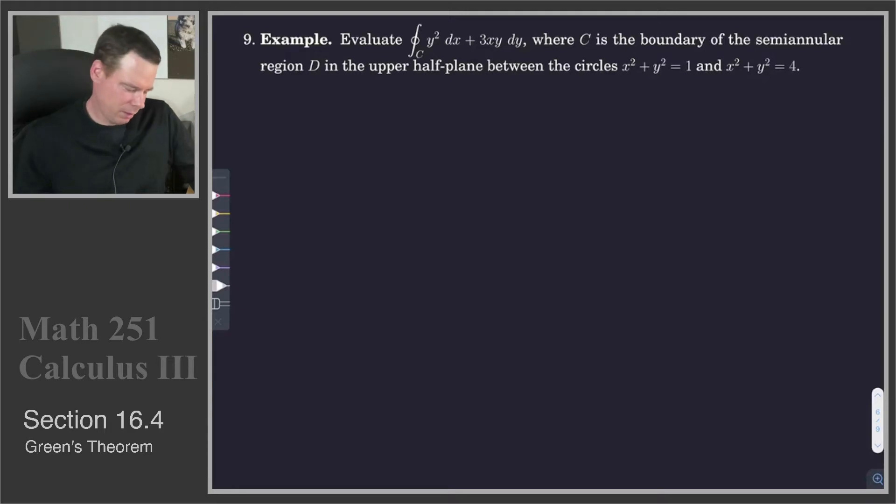Let's have another look at an example involving Green's Theorem. We want to evaluate this line integral where C is the boundary of the semi-annular region D in the upper half plane between a circle of radius 1 and a circle of radius 2.